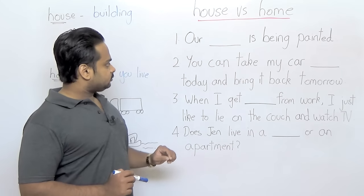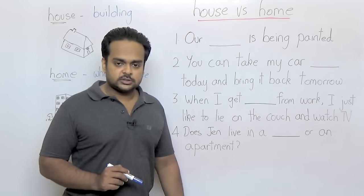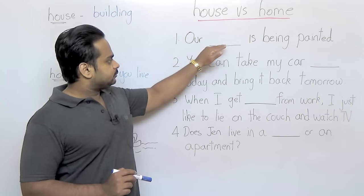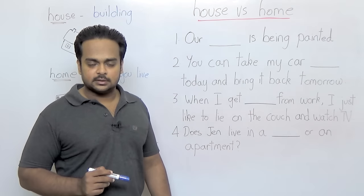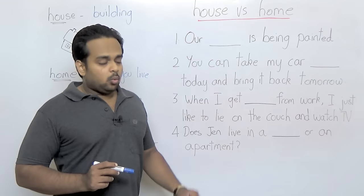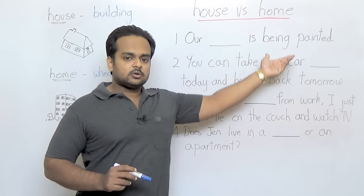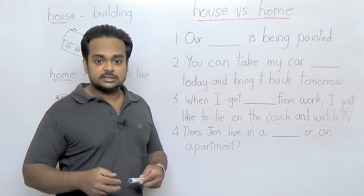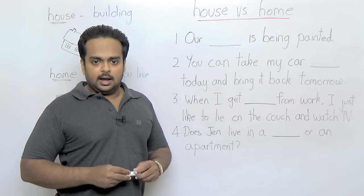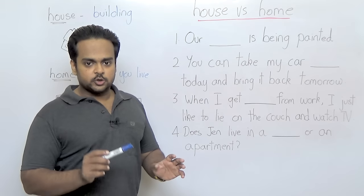I have here four sentences. Take a look at the first sentence: our blank is being painted. Would you write house or home in the sentence? Well, if you read the sentence carefully, you see that we're talking about something being painted and painting is a physical action and painting is usually done on a building. So here we need the word house. Our house is being painted.